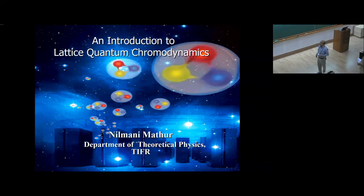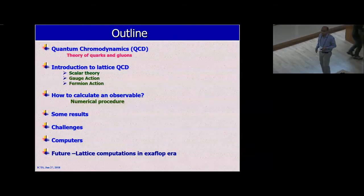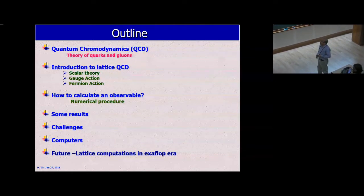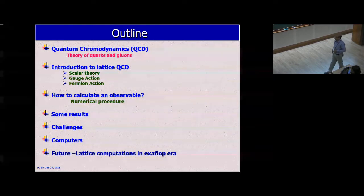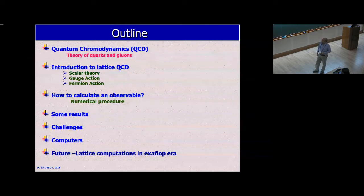I will talk about the introduction of lattice quantum chromodynamics. I will introduce first a bit about quantum chromodynamics and then talk about some introduction to lattice QCD with scalar theory, then gauge action, fermion action, and how to calculate an observable. I will show lots of prominent results that throughout the last 40 years people have obtained, and then discuss some of the challenges and what type of computers we use.